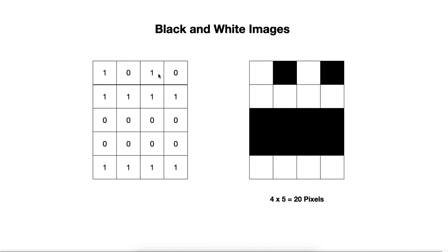Each cell of this table is called a pixel and has a specific value. This value represents how the pixel will be shown. For example, if the value of the pixel is one, it will be white. If the value is zero, it will be black. So one is white and zero is black, and so on for all the other pixels.